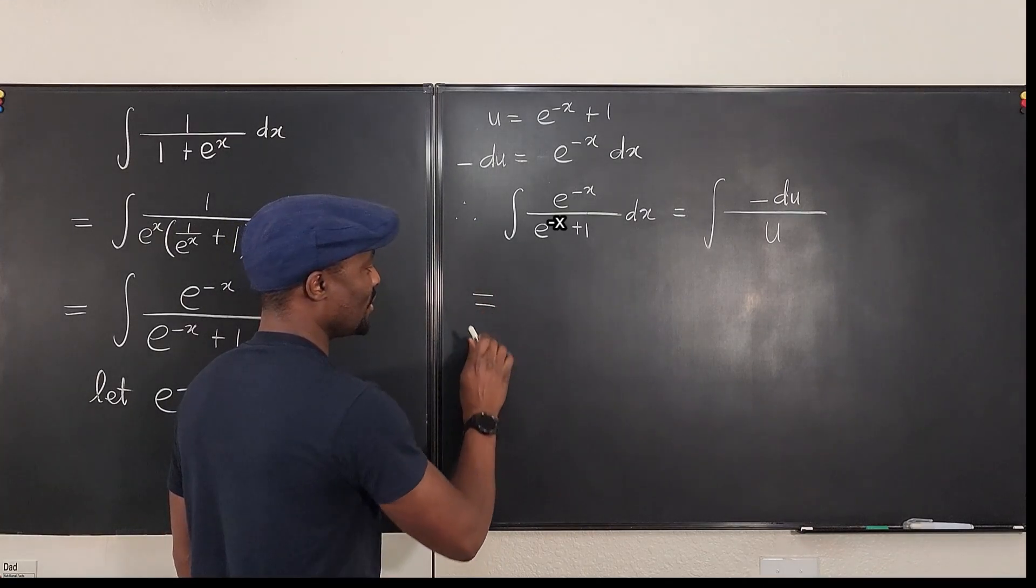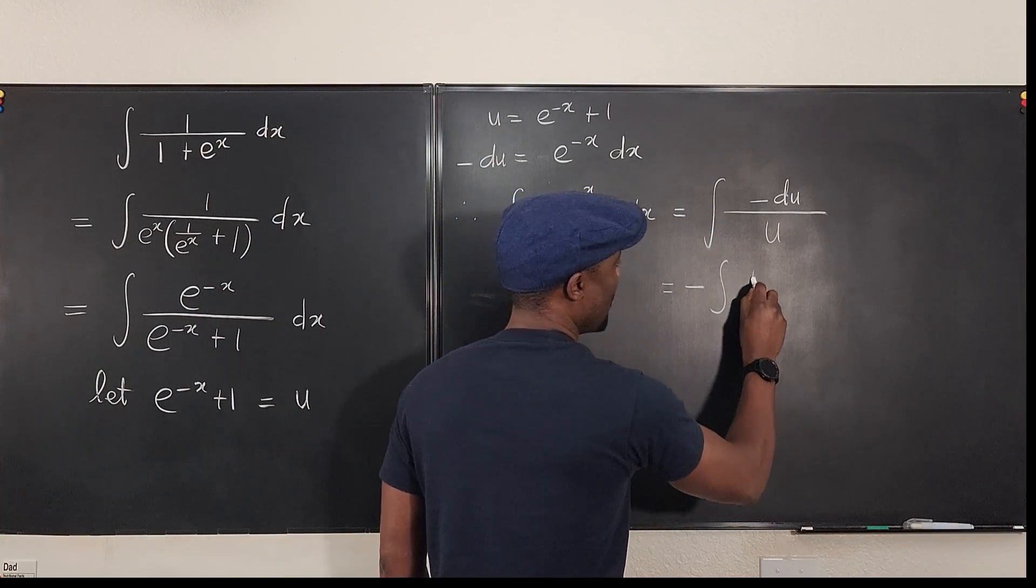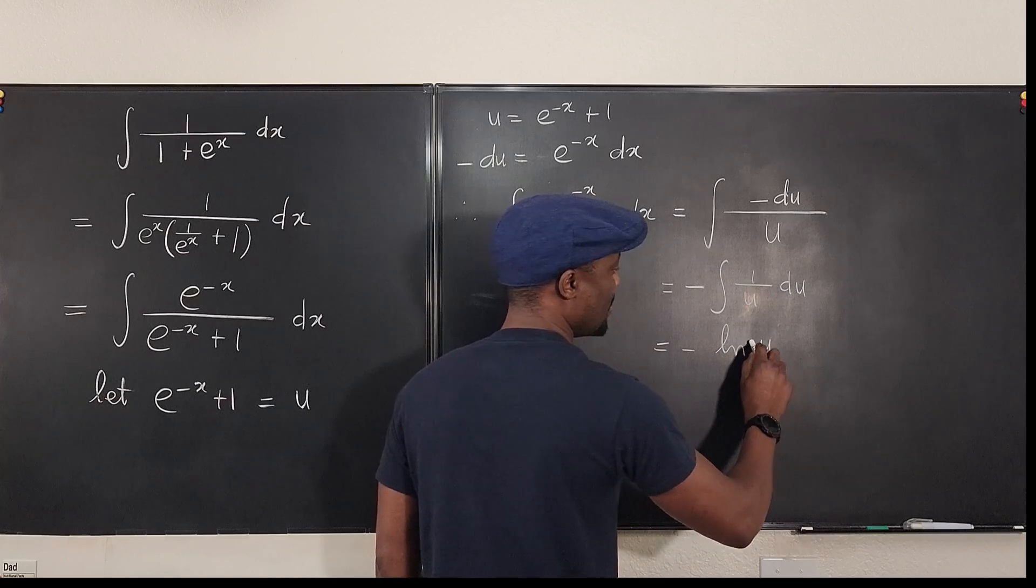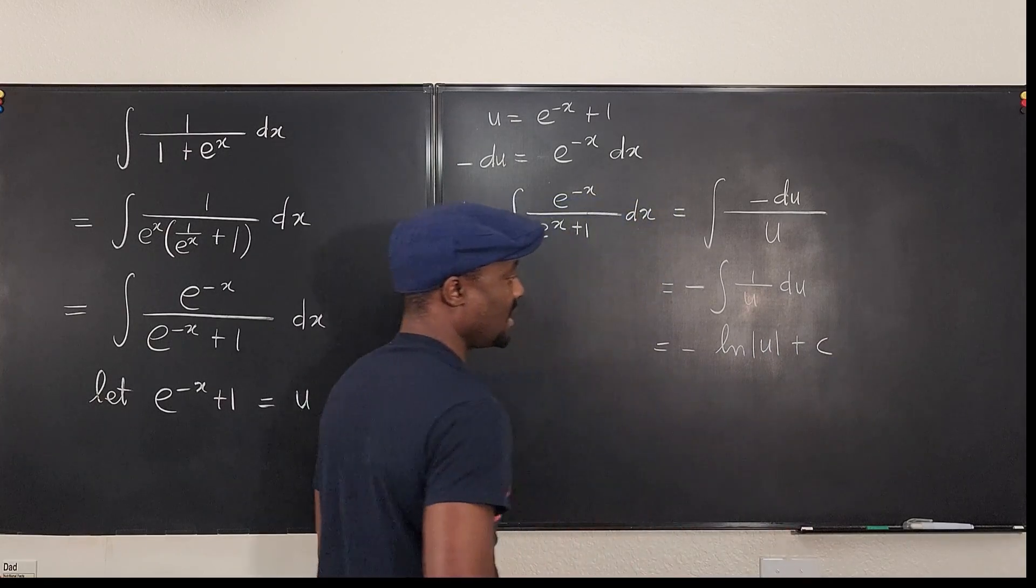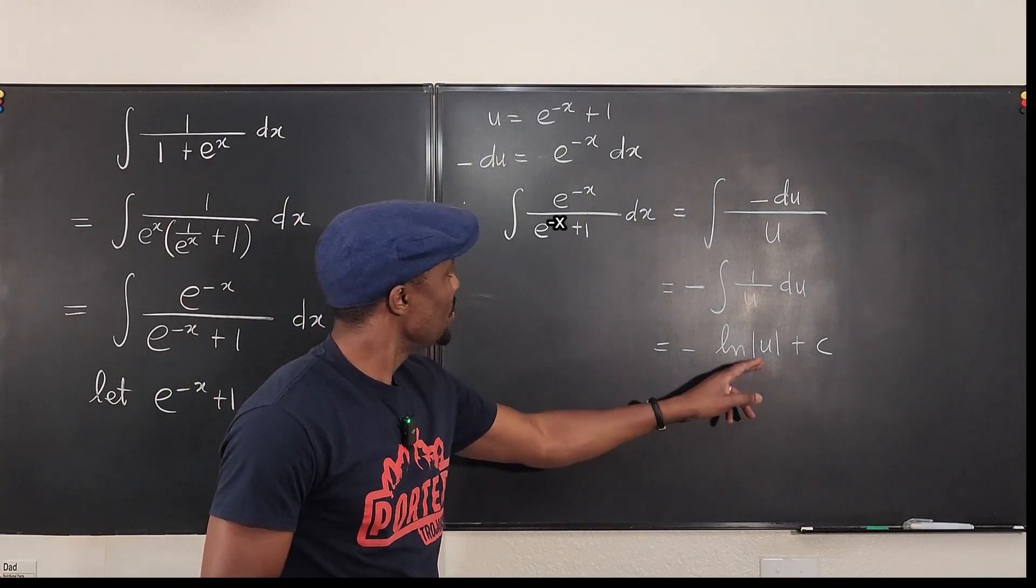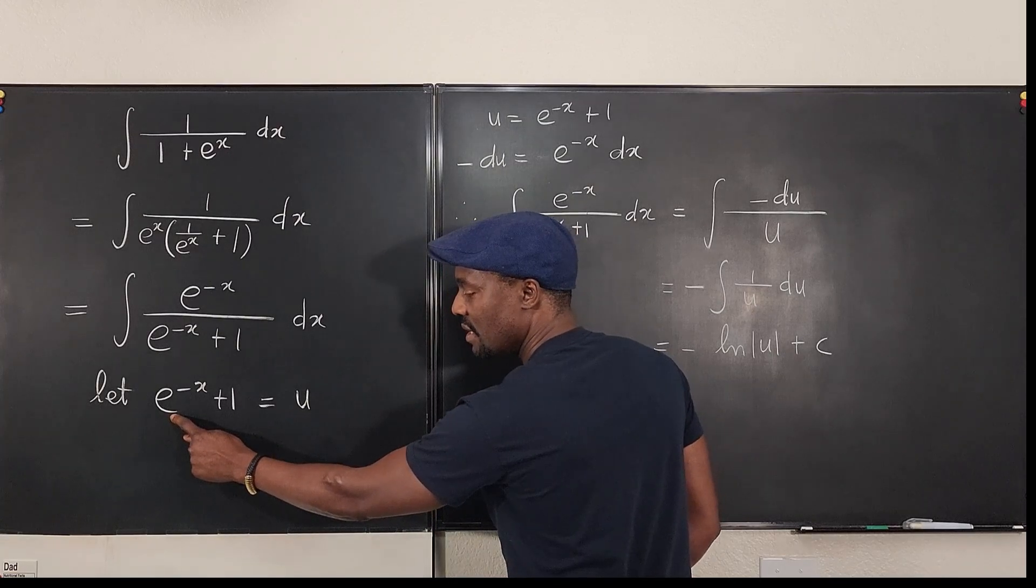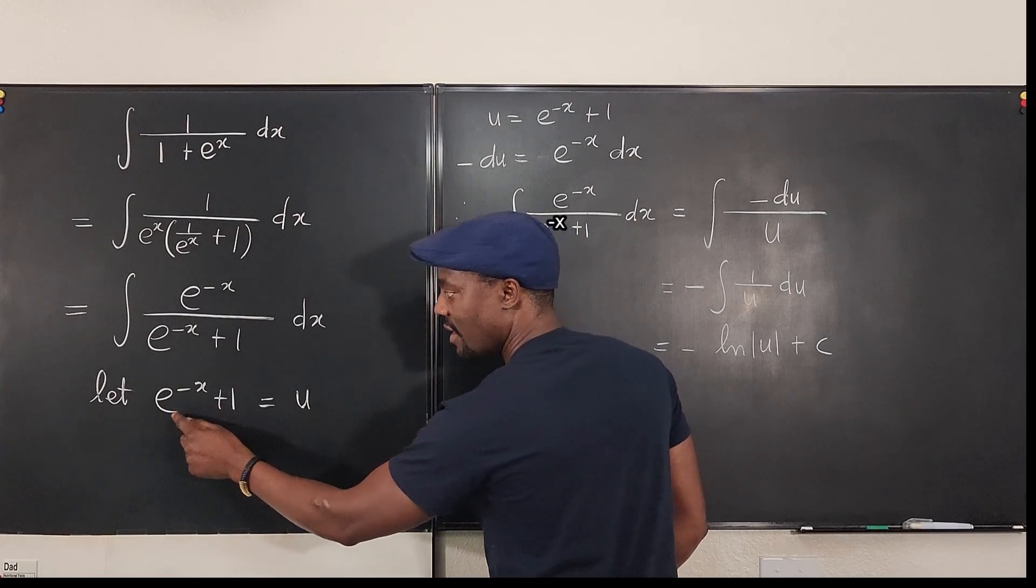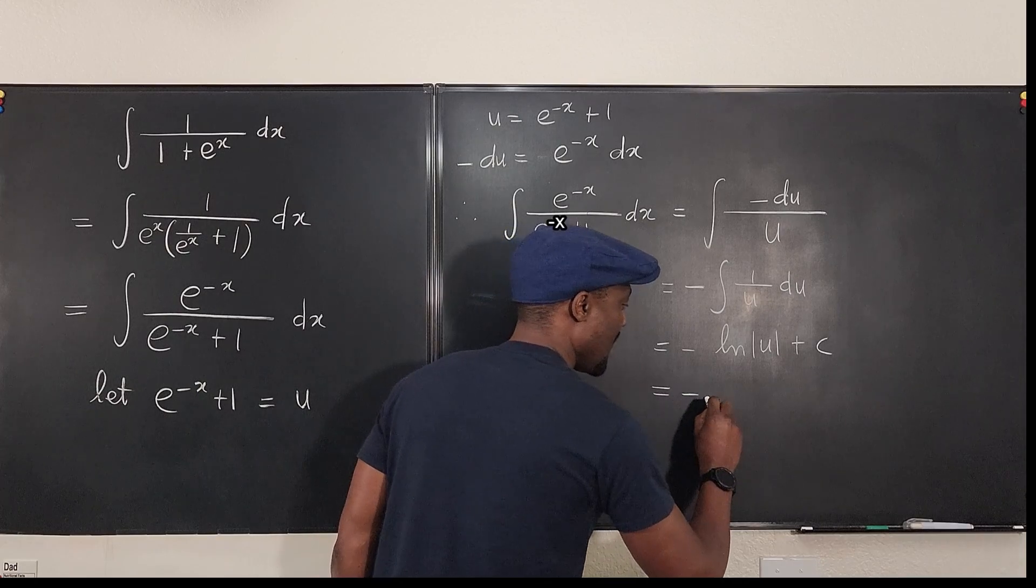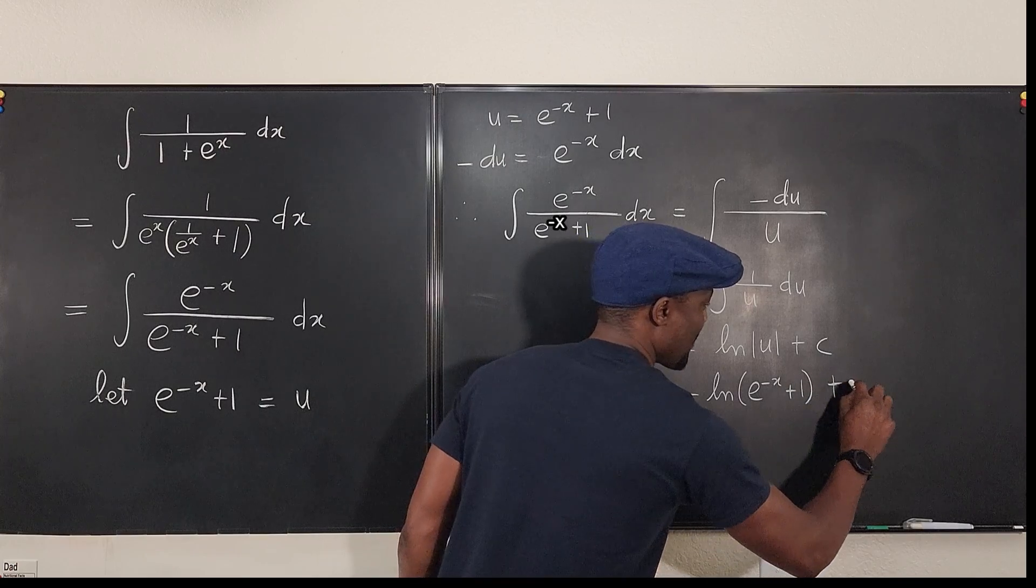So this is equal to, or maybe I should write it here. This is now equal to, I bring out my minus, minus integral of 1 over u du. And that's minus the natural log of u plus c. That's it. What did we say u was? u is e to the minus x plus 1. But I know that this can never be negative. And a number that's never negative plus 1 is always positive. So I don't need the absolute value function. So this is minus the natural log of e to the minus x plus 1 plus c.